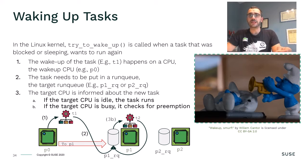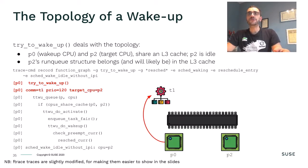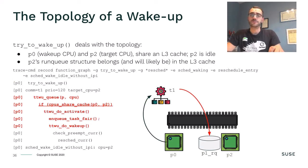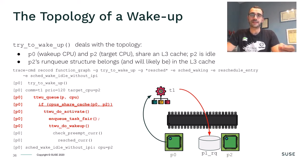If the target CPU was not idle, the newly waking task may or may not run immediately, depending on whether it will preempt the other task running there. Now, in order to highlight the impact of topology in the task wake-up path, let's use the help of Ftrace and TraceMD. Tracing the wake-up path, we first find an event about task T1 waking up on CPU P0, and T1 wants to run on CPU P2. There we find the function called CPUsShareCache — this is where the built-in topology comes into play. We check whether the wake-up CPU and the target CPU share the LLC, which is typically the L3 cache.